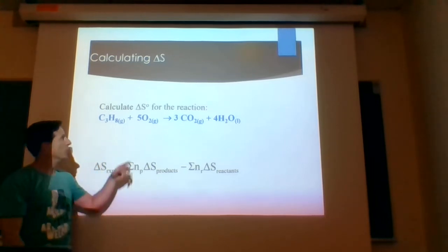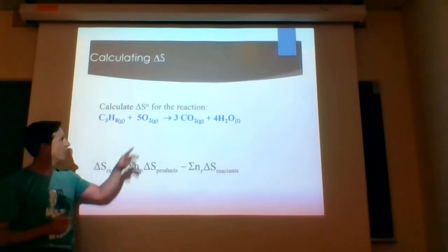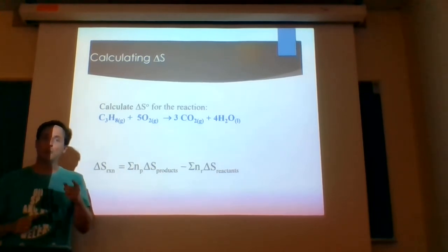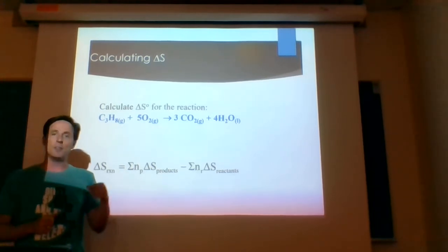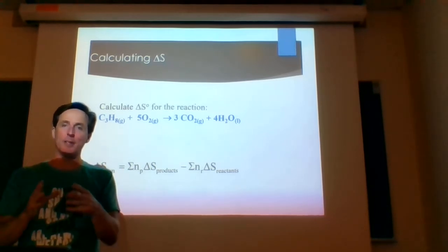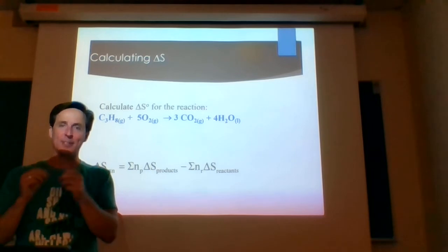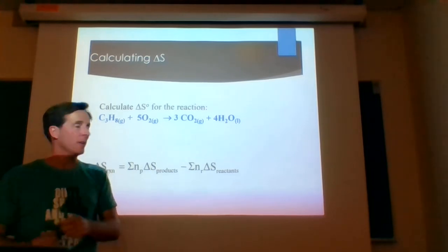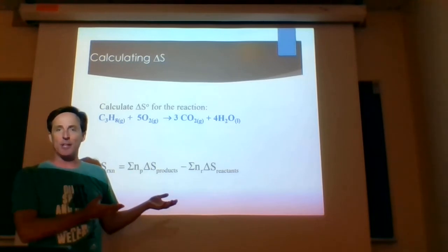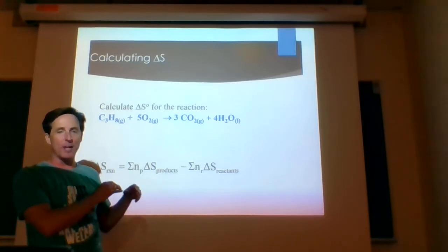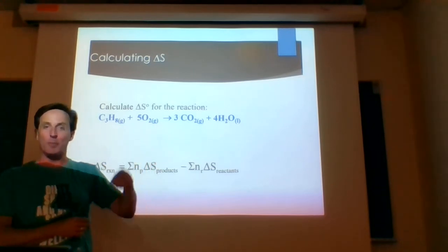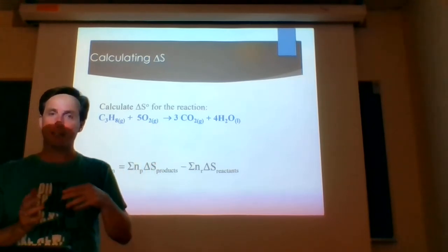A key difference from chapter 5: with delta H, we said the standard enthalpy of formation for elements like O₂ is zero. That is NOT true with entropy. The only substance with an entropy value of zero is a perfect crystal at zero Kelvin. None of our reaction components are perfect crystals at zero Kelvin, so we never have an entropy value of zero for any component — you have to look all of them up and do products minus reactants.